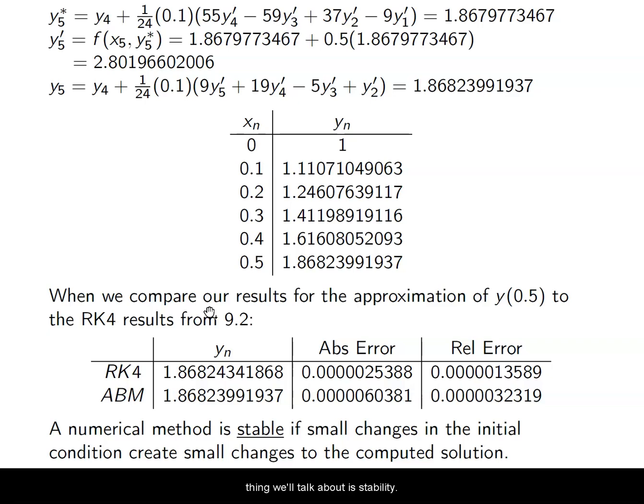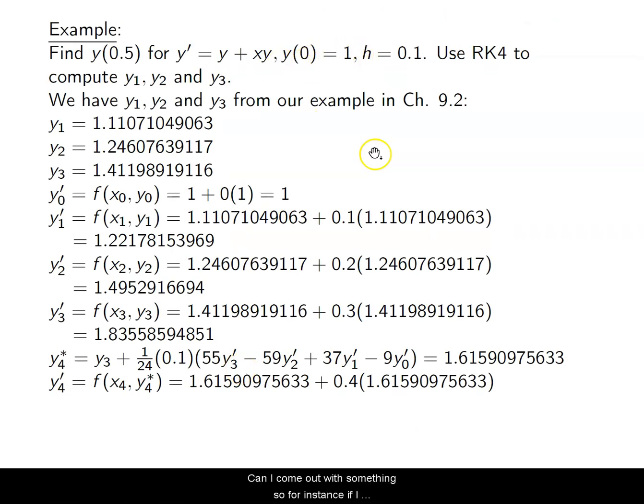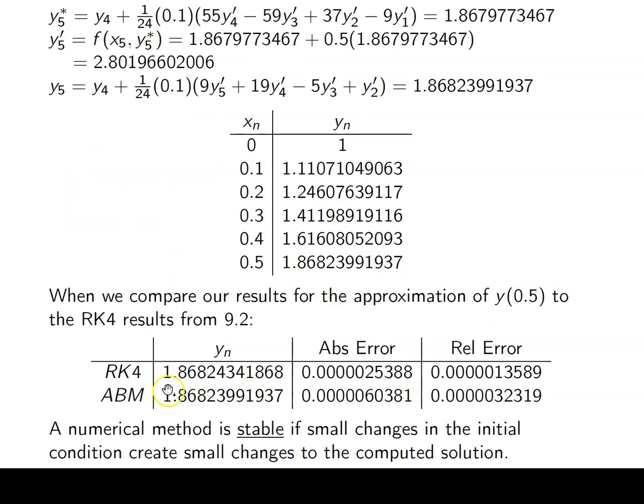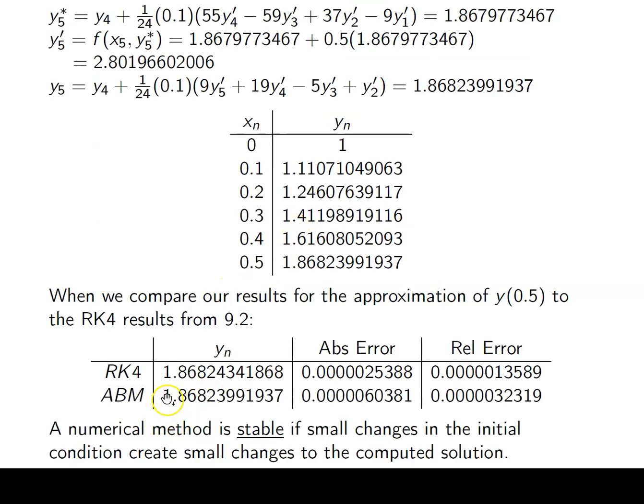So the last little thing we'll talk about is stability. Basically, a numerical method is called stable if small changes in the initial condition create small changes in my computed solution. So if I only change the initial condition a little bit and I come out with something, so for instance, if I go y(0) equals 0.9, if I still come up with something that is very, very close to this, I'm stable. However, if I change that 1 to a 0.9 and I get something like 28.78, then that's not very stable. If a small change creates a huge difference in the outputs for the approximations, that is not a stable method.